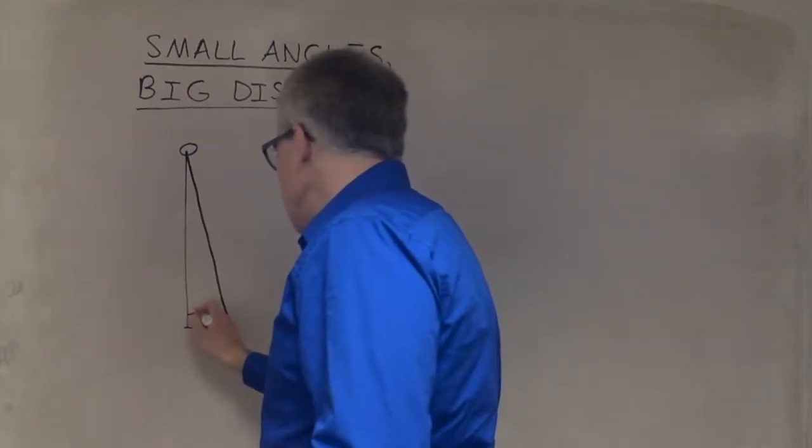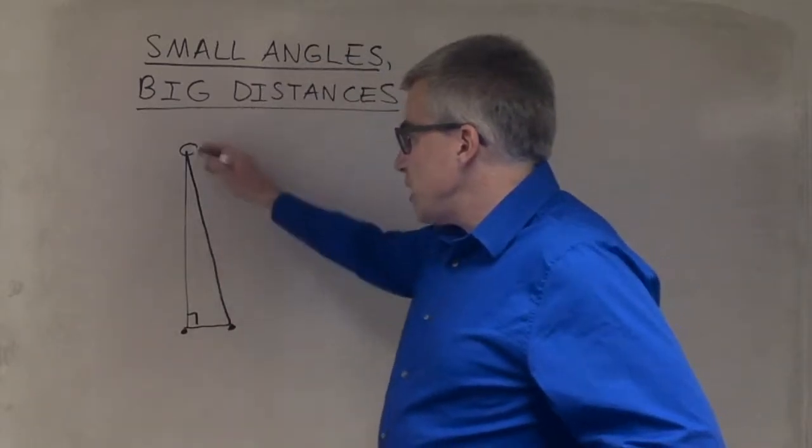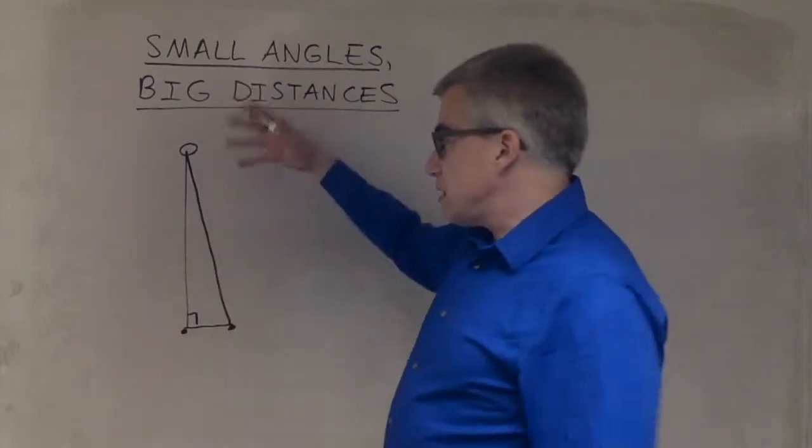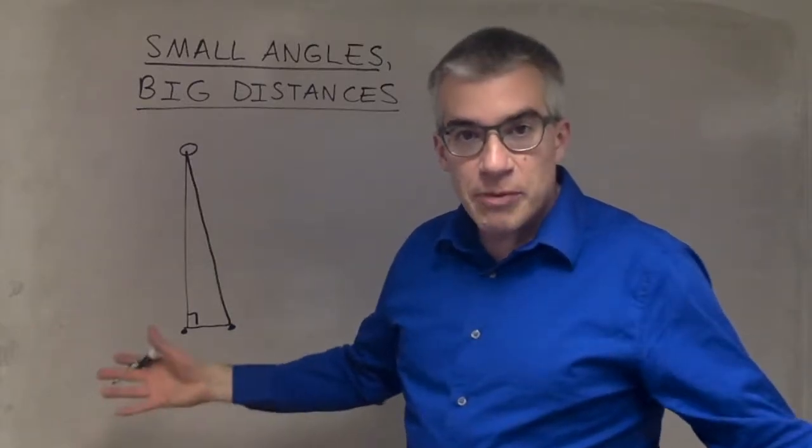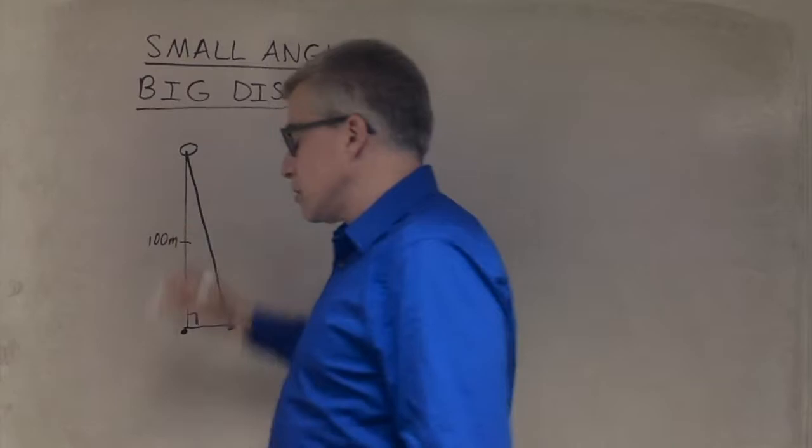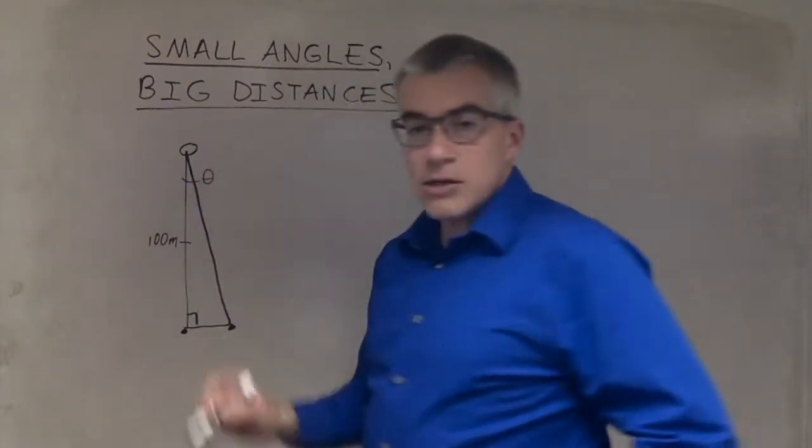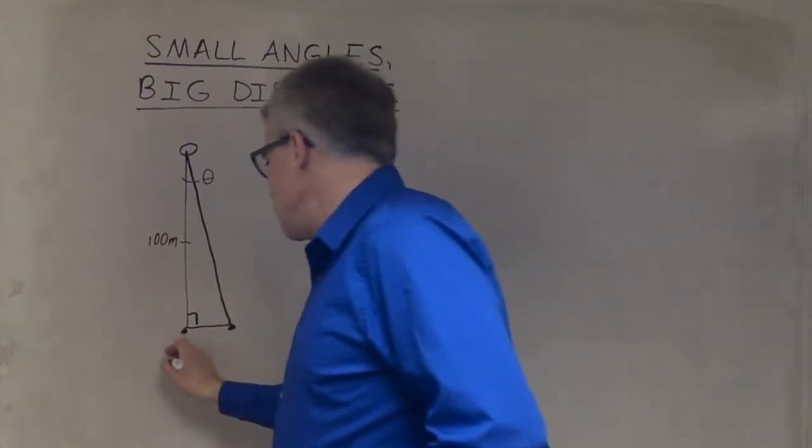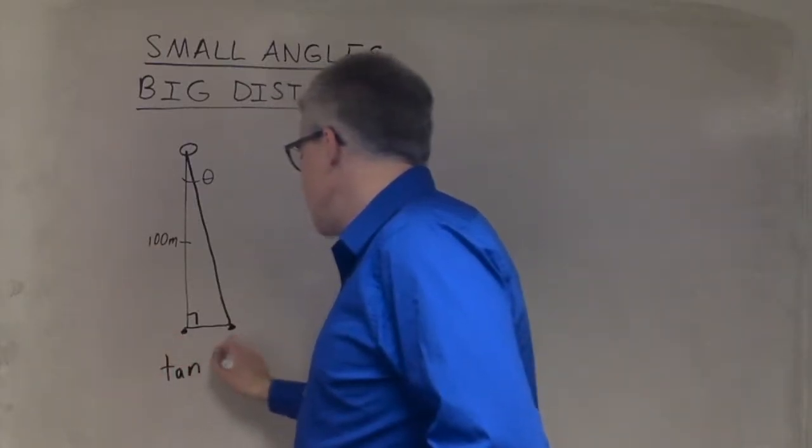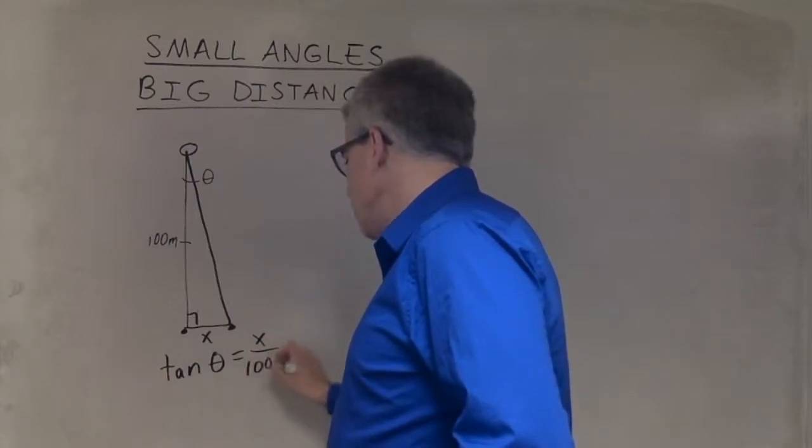So first option, if you're trying to figure out how far it is from here to here, you could make this a right triangle. If they say that the bird is 100 meters up, this side here could be 100 meters. This could be 90 degrees, this could be your small angle. And then the tangent of that angle would be x over 100 meters.